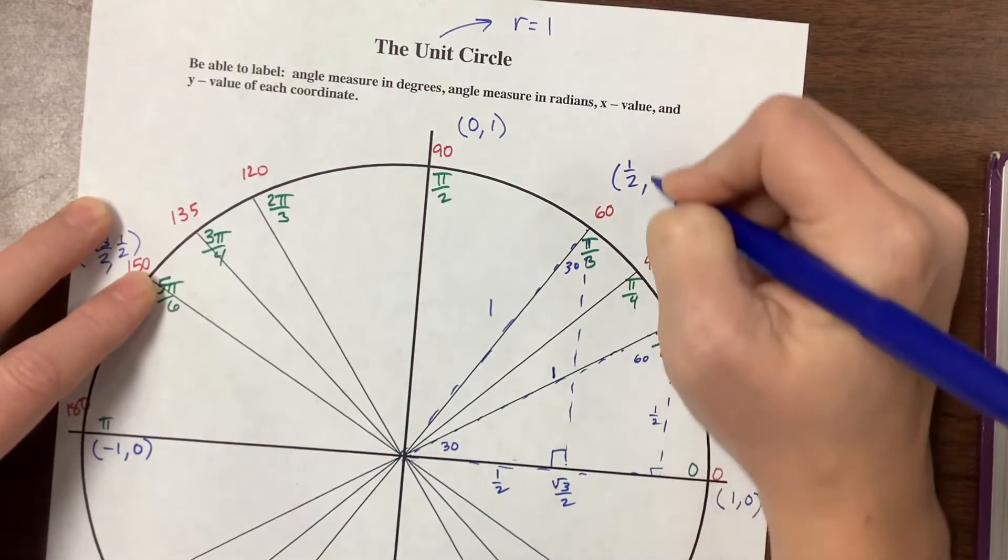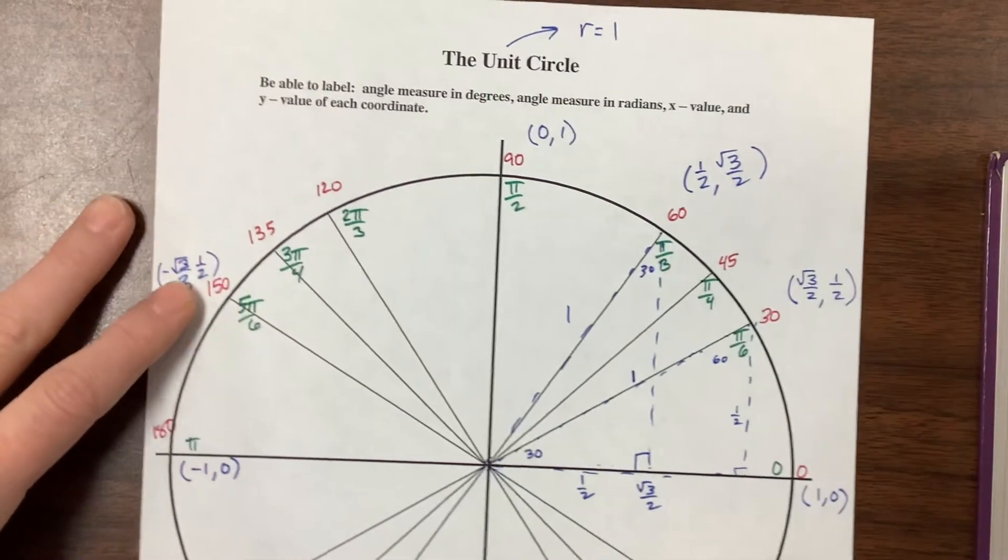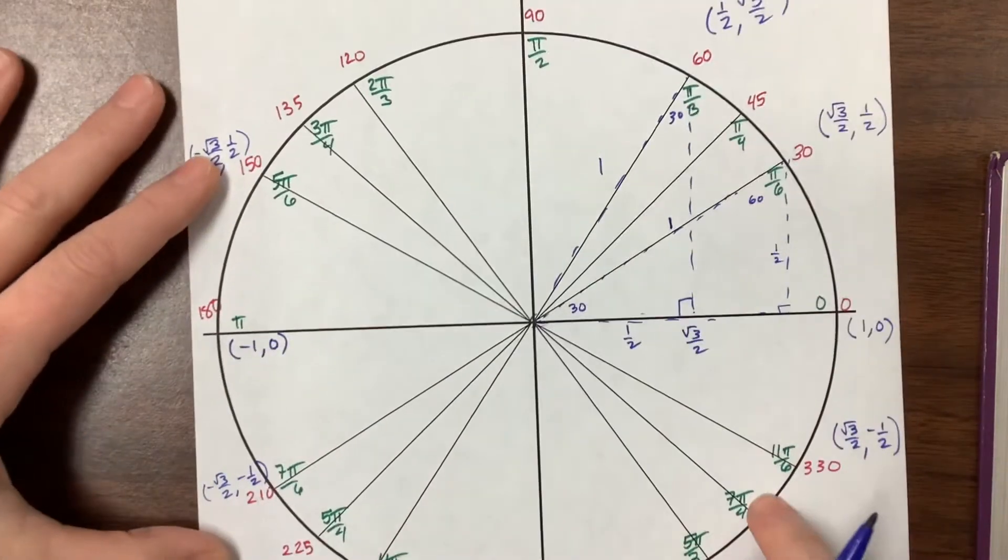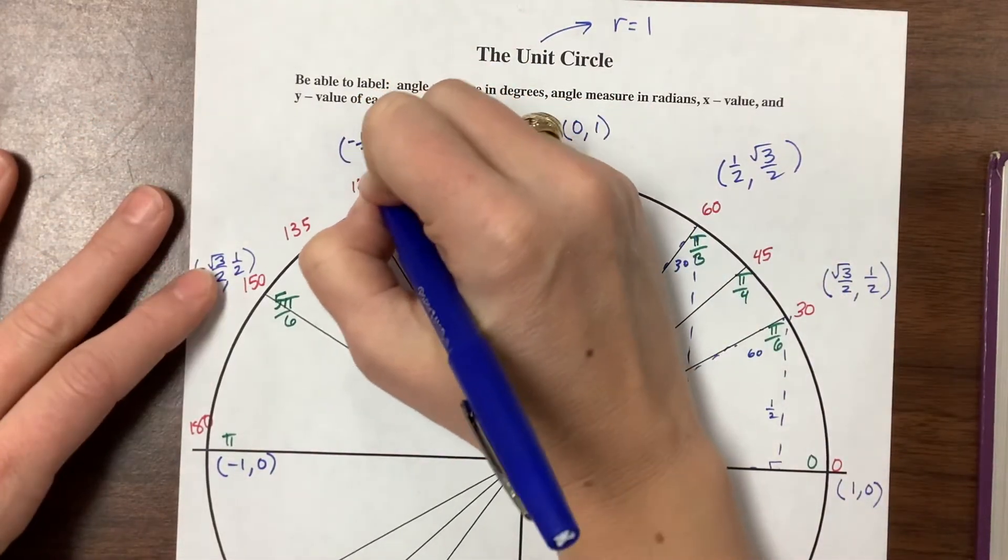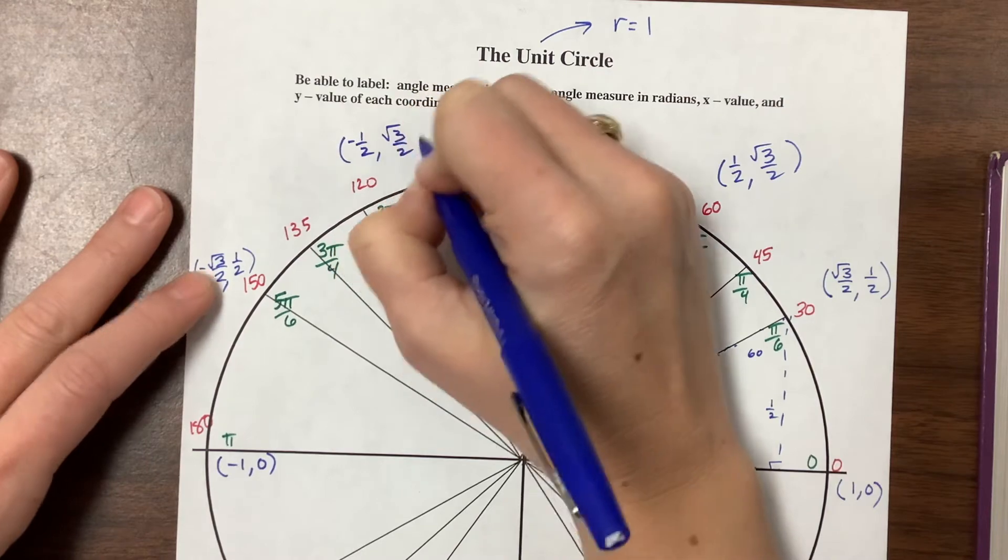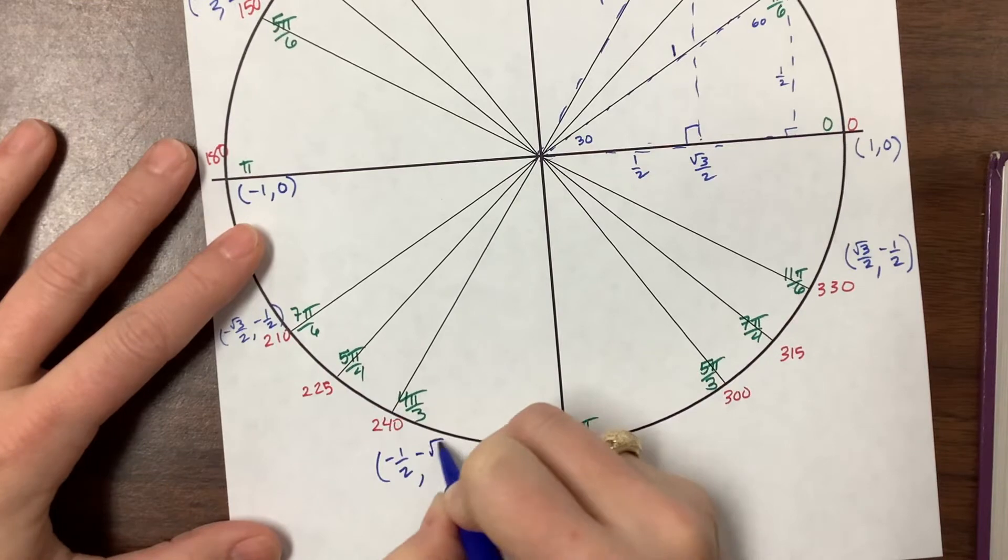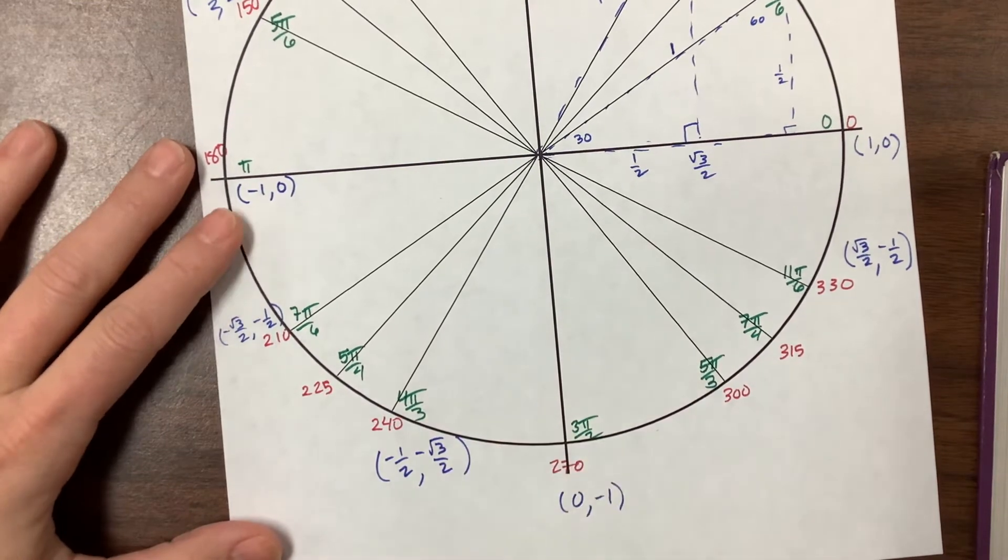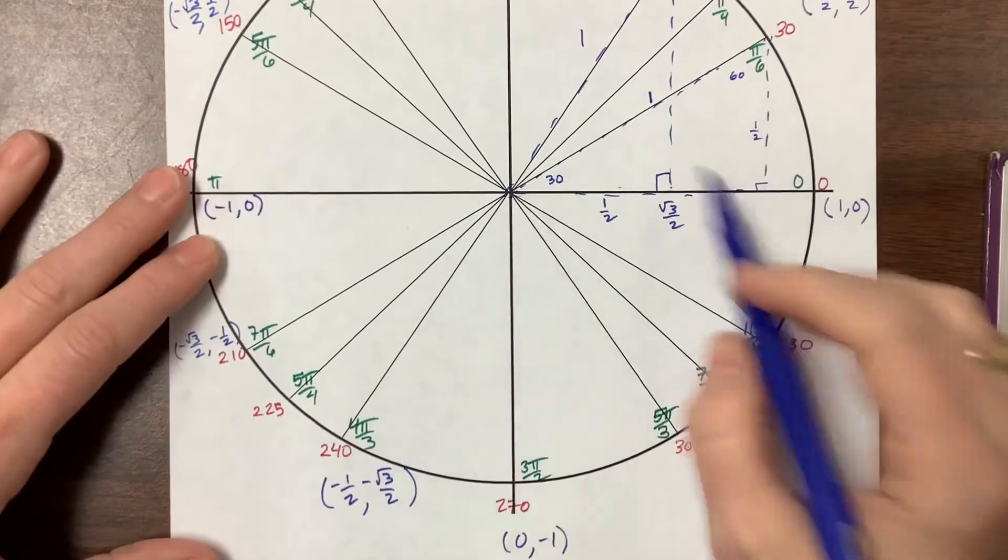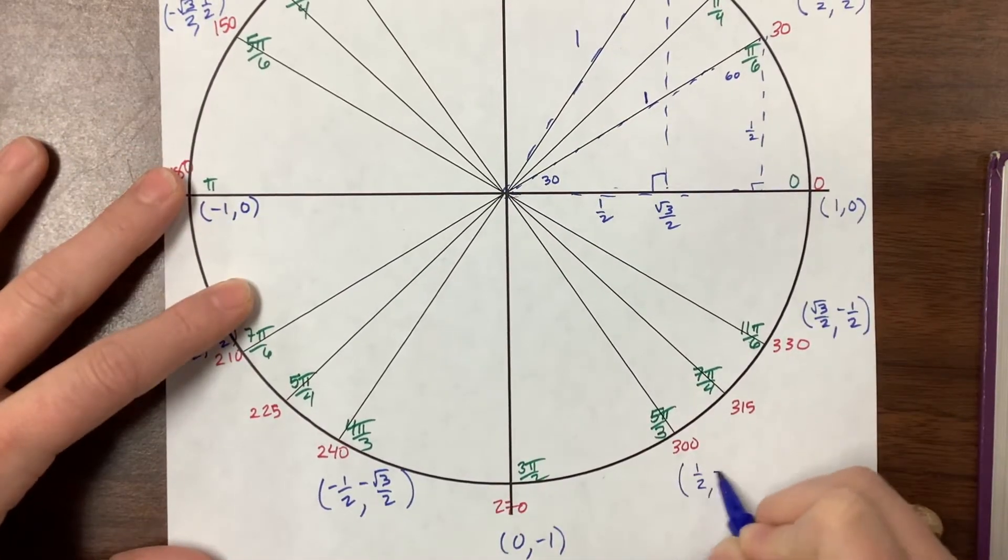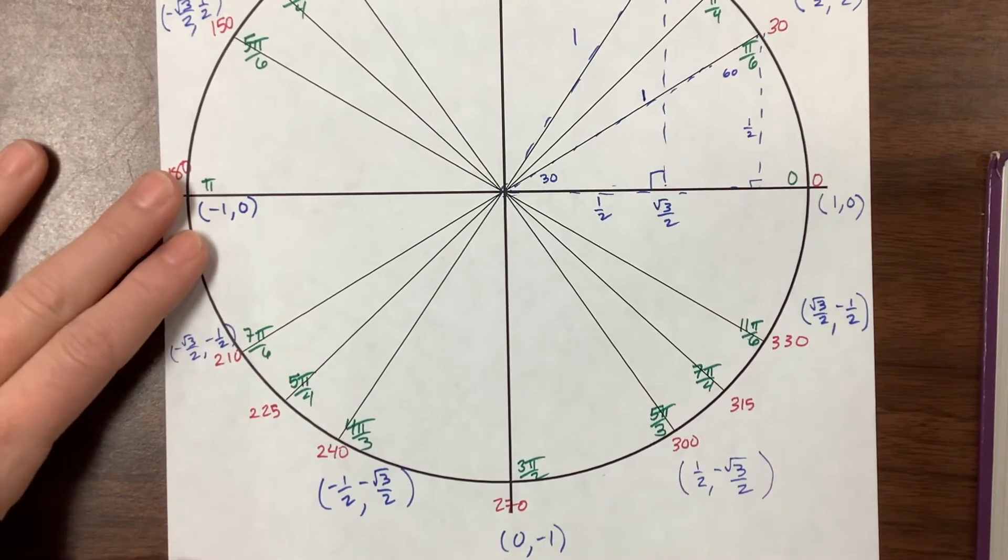This has the coordinate (1/2, root 3 over 2), and we're going to reflect, reflect, reflect. This becomes (-1/2, root 3 over 2). This becomes (-1/2, -root 3 over 2). Then I have (1/2, -root 3 over 2), and that is the π/3 family.